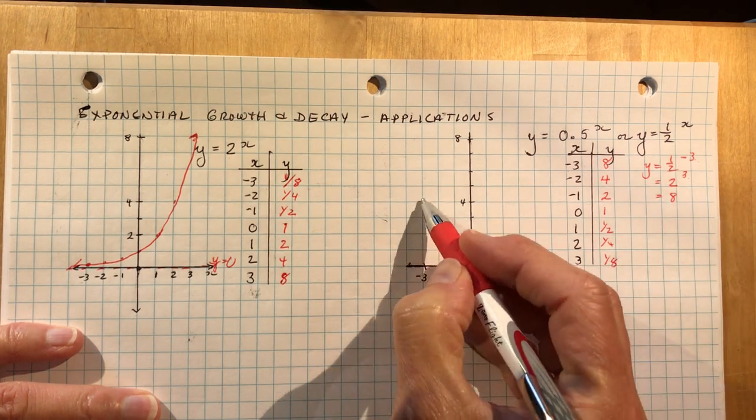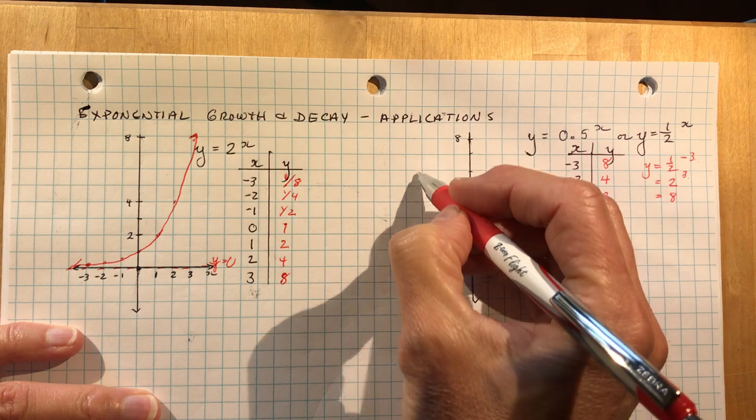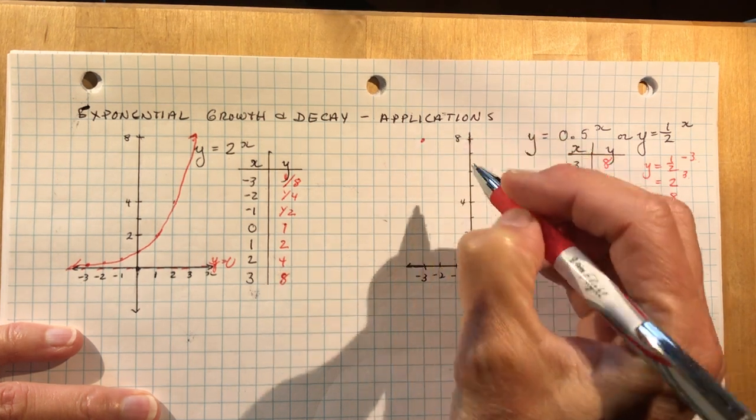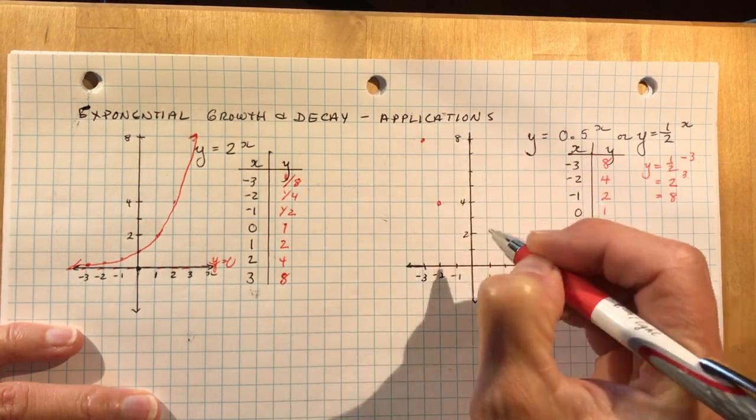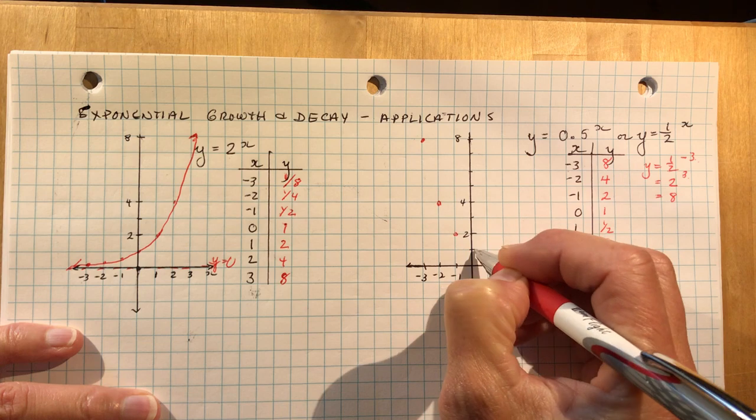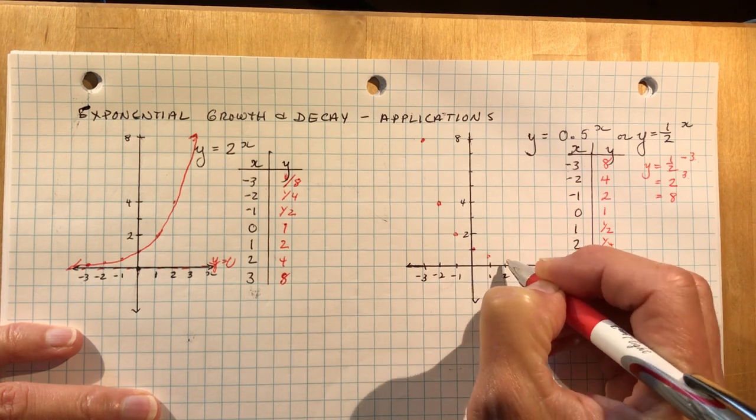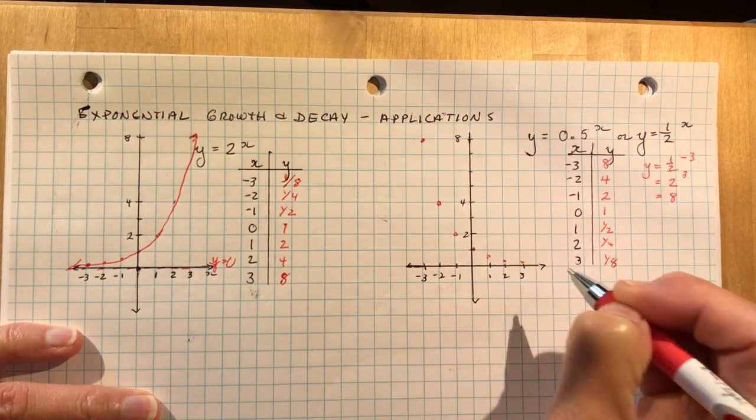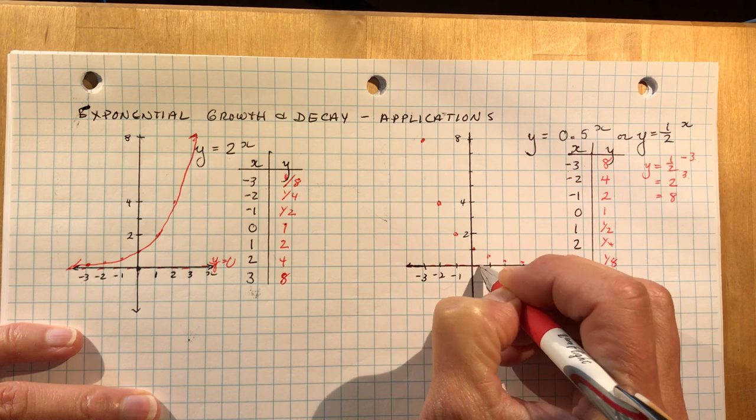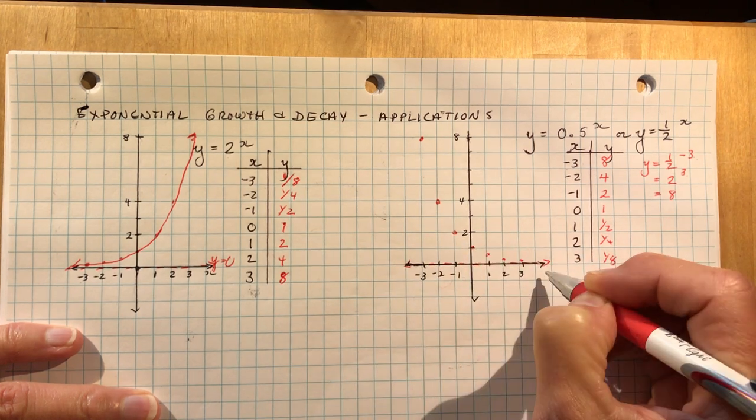So when you go to graph these, this time you're starting with your highest point here. And we come down, 1, 2, 0, and then I have a half, a quarter, an eighth. And I still have my asymptote because I never crossed the line y equals 0.